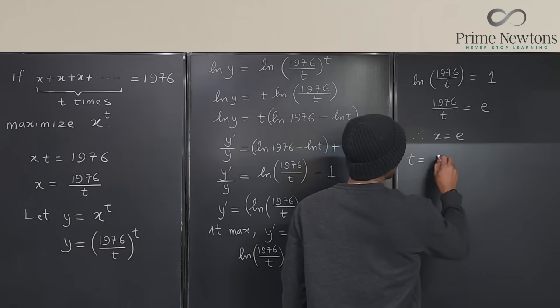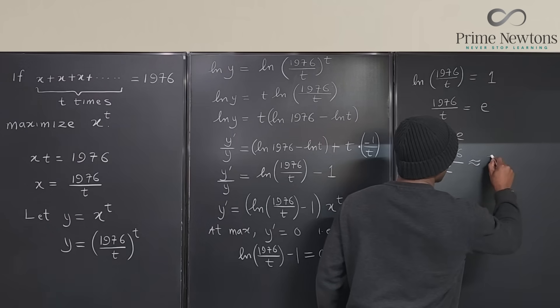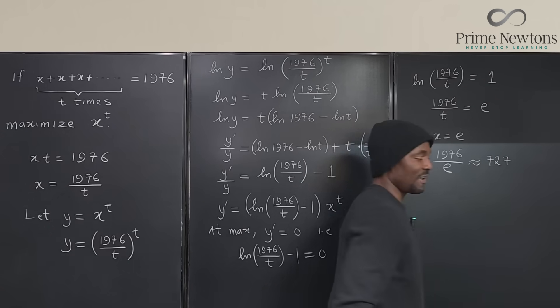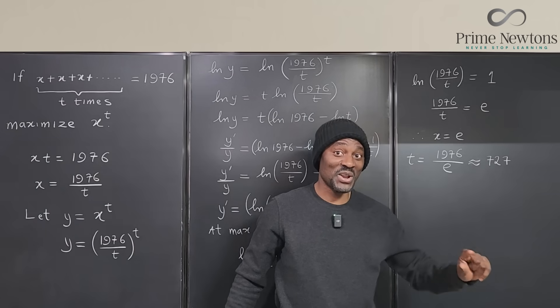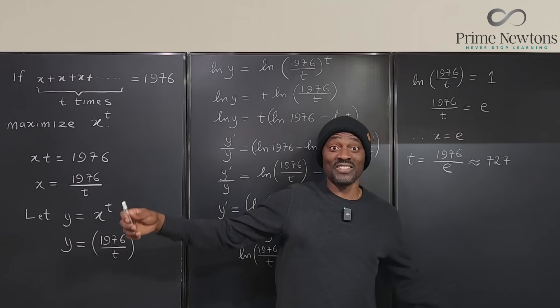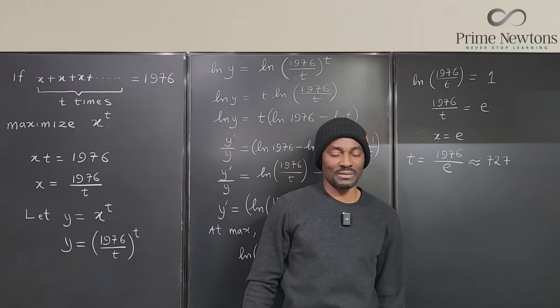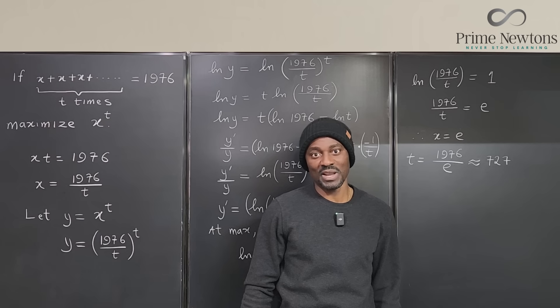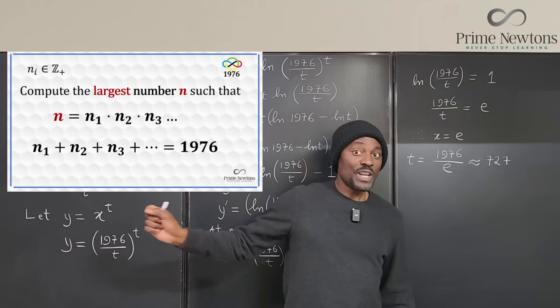And if X equals E we can easily find what T is. Let's actually find what T is. T will be equal to 1976 divided by E which is approximately 727. So that means if you take E and you multiply it 727 times you're going to end up with 1976, and if you raise E to power 727 you are going to get the highest possible exponent or number possible.